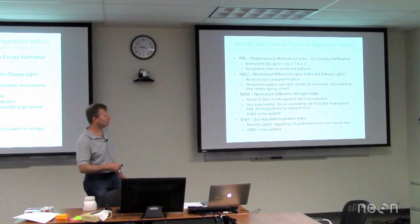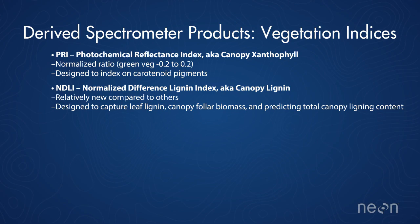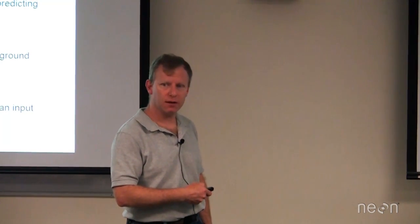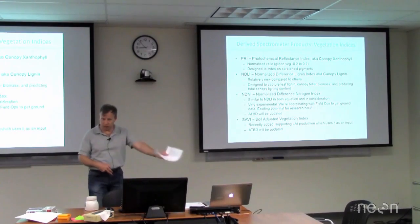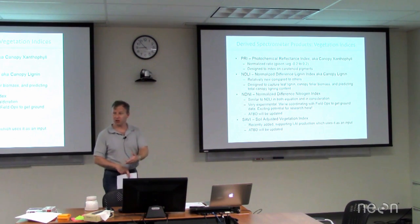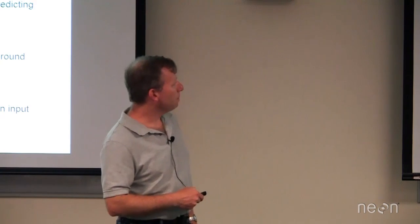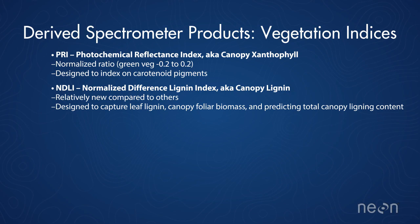Folks also want to look at dead canopy stands. The living biomass is great, but what about the dead stuff? So we get into NDLI — Normalized Difference Lignin Index, or canopy lignin. This one is relatively new compared to others; so far it has pretty good support in the literature. In using it, it opens up an opportunity for NEON and everyone using our data to do a little bit of validation: how well does it work across different sites? How well does it actually correlate with what's going on on the ground, with all the great measurements collected by Courtney and his team?